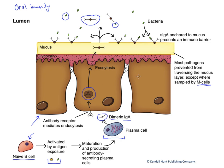This is important because sIgA is not a circulating antibody and does not create a systemic immune response. Instead, it creates a very focal immune response where the potential infection might be occurring, keeping those bacteria in check in the lumen of the gut.